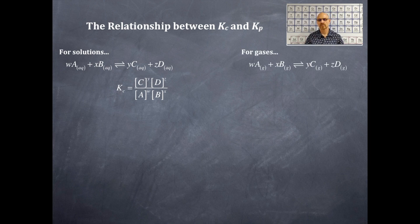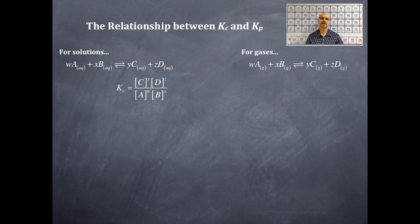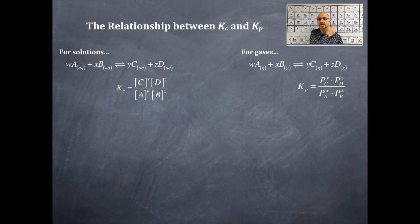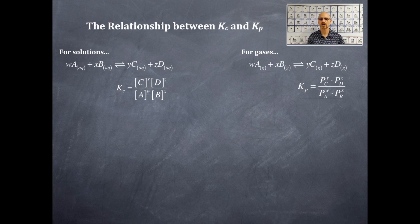Now for gases instead of solutions, A, B, C, and D are all gases and not in solution. We still have the same stoichiometric coefficients W, X, Y, and Z. We're going to write the K expression for this, but since these are gases, this is going to be Kp. We don't use brackets because brackets represent molarity. Pressure is P, so that's why it's Kp: P of C to the Y, times P of D to the Z, divided by P of A to the W, times P of B to the X.